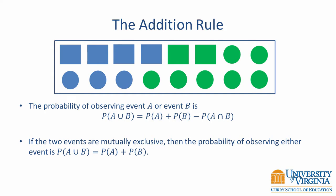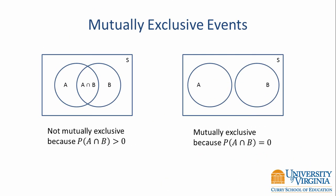Let's look a little bit more closely at what we mean by mutually exclusive events. Here you see a slide with two Venn diagrams. The diagram on the left shows the case where the events are not mutually exclusive, because the probability of observing both A and B is greater than zero. The Venn diagram on the right shows the case where events A and B are mutually exclusive because the probability of observing them both is equal to zero.